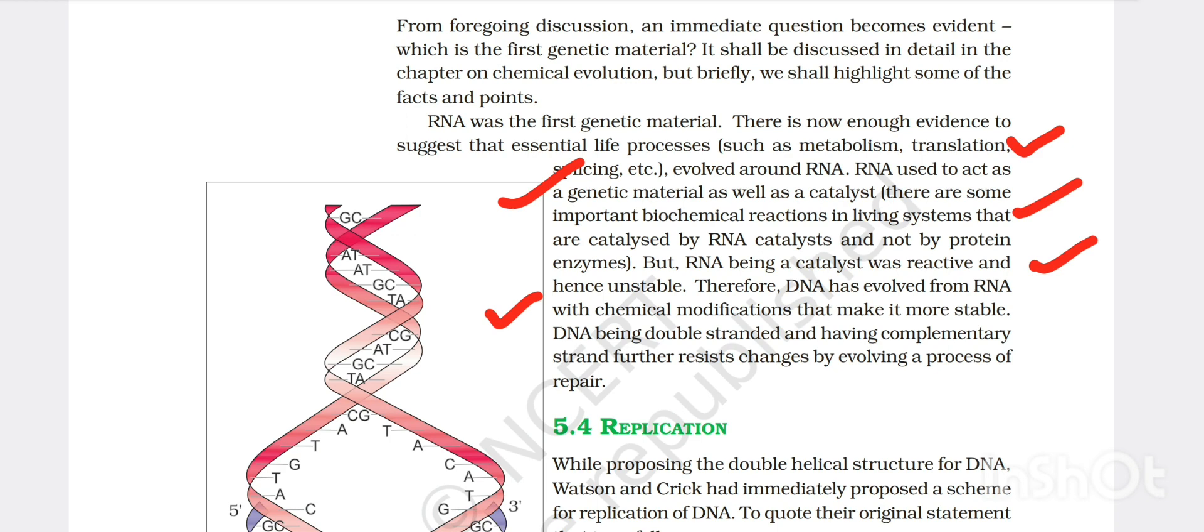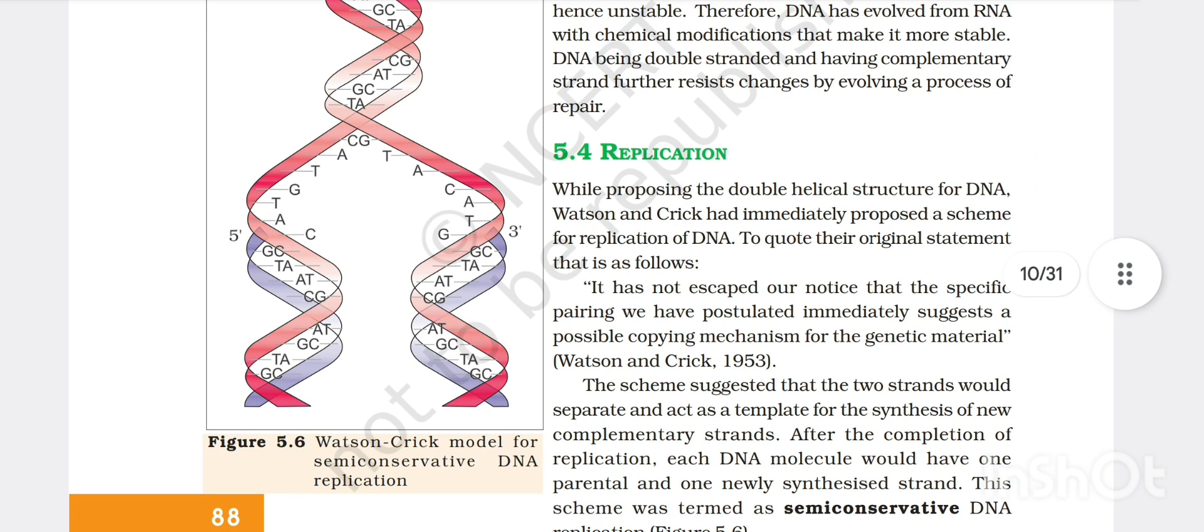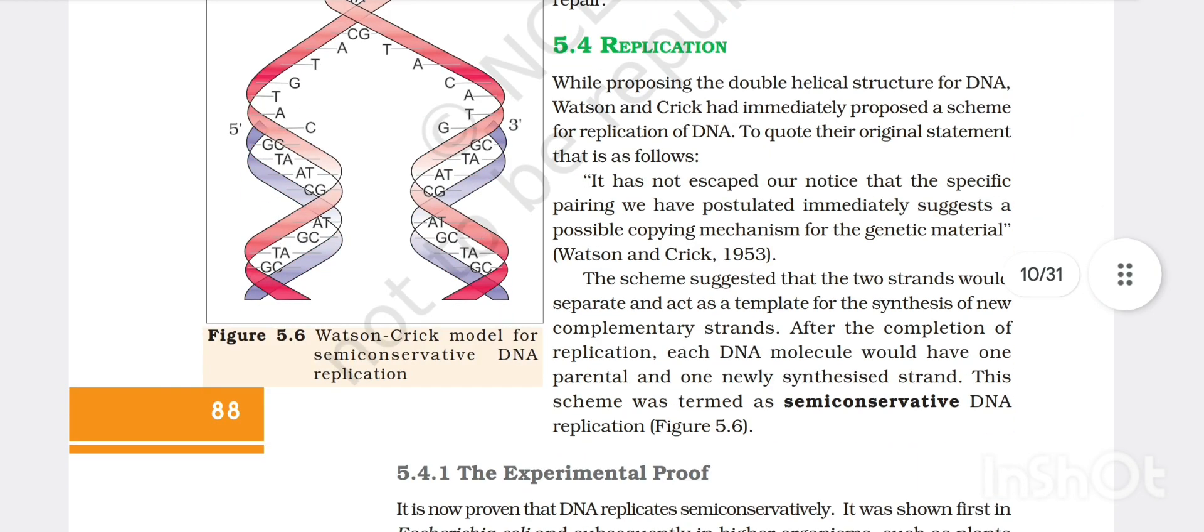DNA being double stranded and having complementary strand further resist changes by evolving a process of repair. Then replication - while processing the double helical structure of DNA, Watson and Crick had immediately proposed a scheme of replication of DNA. To quote their original statement, it has not escaped our notice that specific pairing we have postulated immediately suggests a possible copying mechanism for the genetic material.